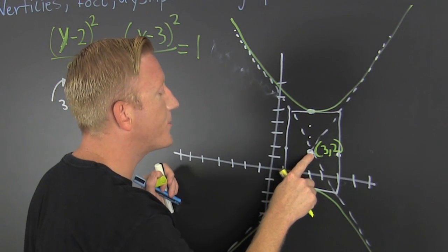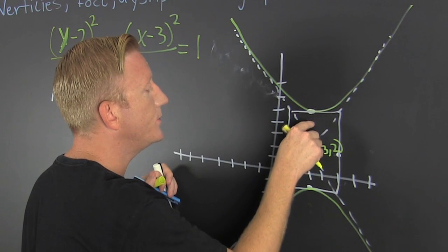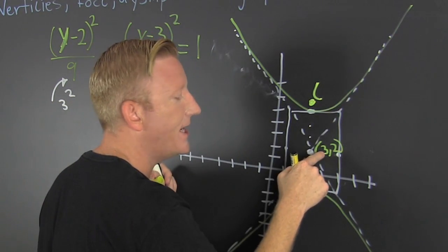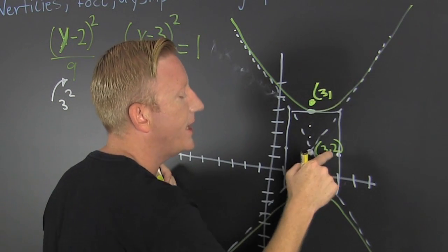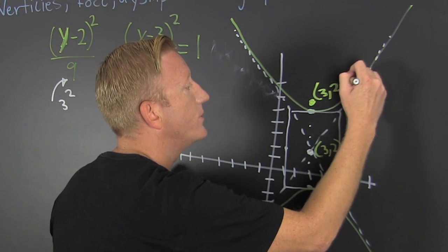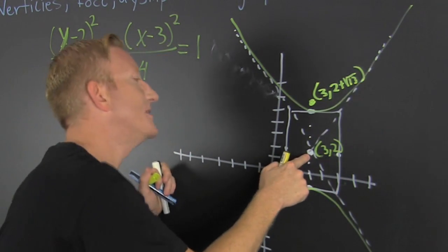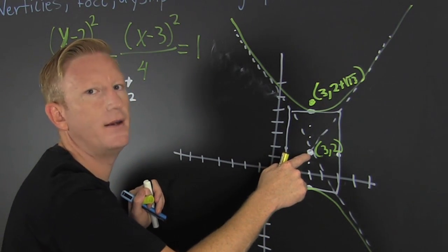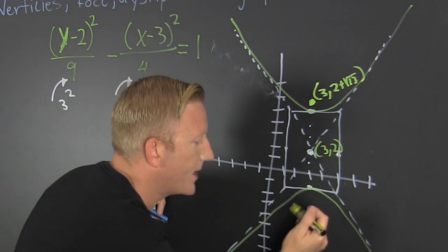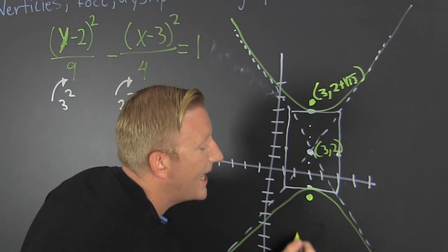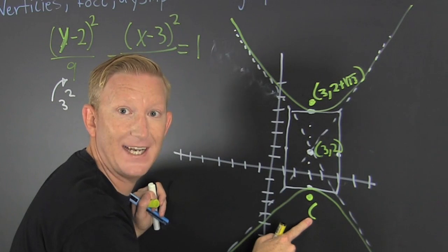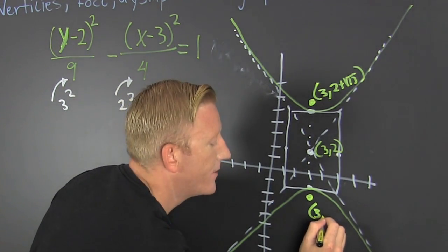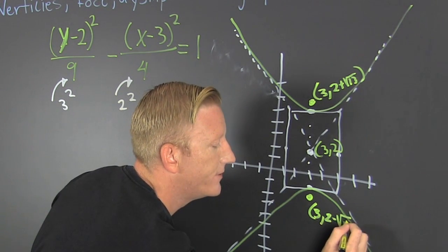From the center we go up √13, which is about 3 and a little bit — one, two, three and a little bit, bam. That point is (3, 2 + √13). Then going down, we get the other focus at (3, 2 - √13). So those are our two foci.